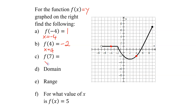Moving along, what is f of 7? What happens when x equals 7? Well, here's 7, halfway between 6 and 8. So here's 7. And what's the point on the graph? It's right there. And what is its y value? This is 2, this is 4, so that is 3. So f of 7 equals 3.